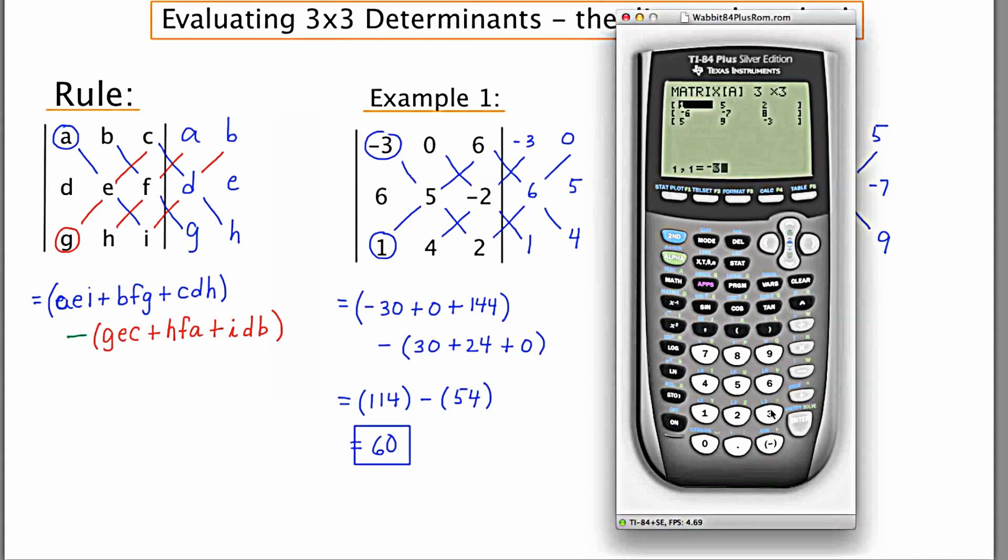And now I'm going to enter negative three, enter, zero, enter, six, enter. And now it's going to be six, five, negative two, six, enter, five, enter, negative two, enter, then one, four, two, one, enter, four, enter, two, enter.